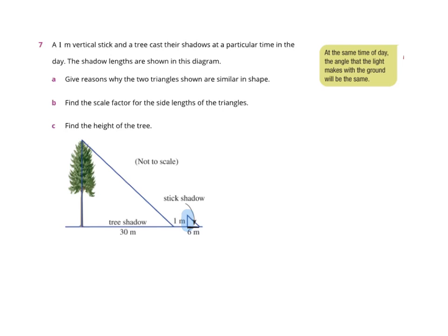Then it says the tree also casts a shadow. So here's the shadow of the tree down there. Because the sun is in the same spot for both the tree and that little stick, you can actually say that this angle is the same for both of them.